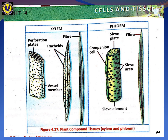Here you can see a diagram of xylem and phloem. In the diagram you can see perforated plates at the ends. These are the fibers and the vessel membrane. This is the phloem with its sieve plates. The sieve plates have pores through which food moves inside, and the movements occur through the fibers as well.